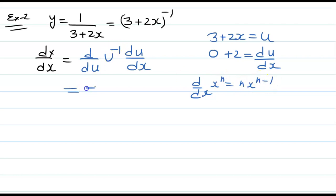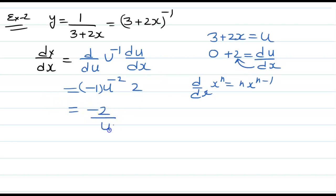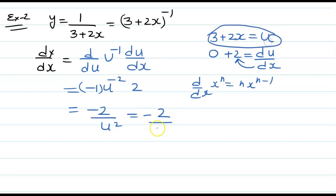Using the same rule d over dx of x to the power n equals nx to the n minus 1, we get minus 1 times u to the power minus 2, and du over dx is 2. So this is minus 2 over u squared. Putting u equals 3 plus 2x back, it will be minus 2 over (3 plus 2x) to the power 2. That is your final answer.